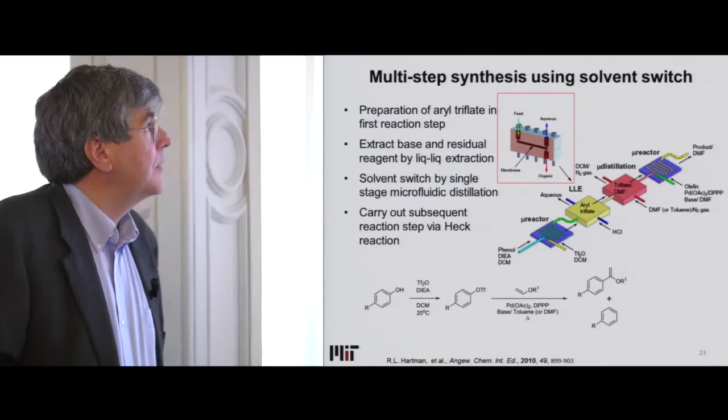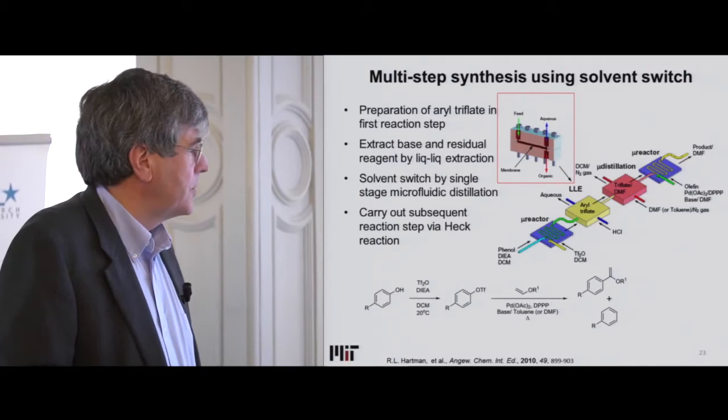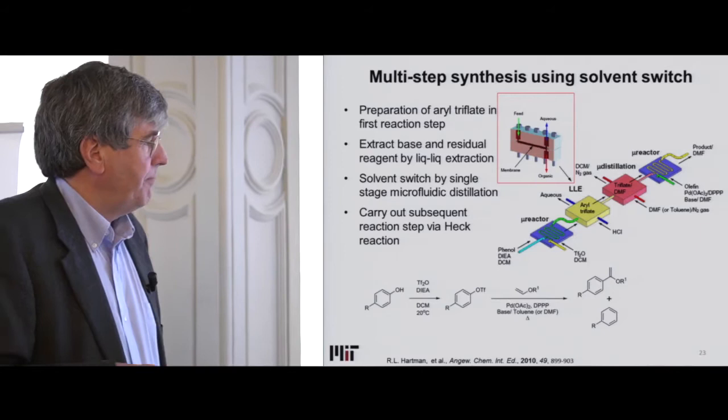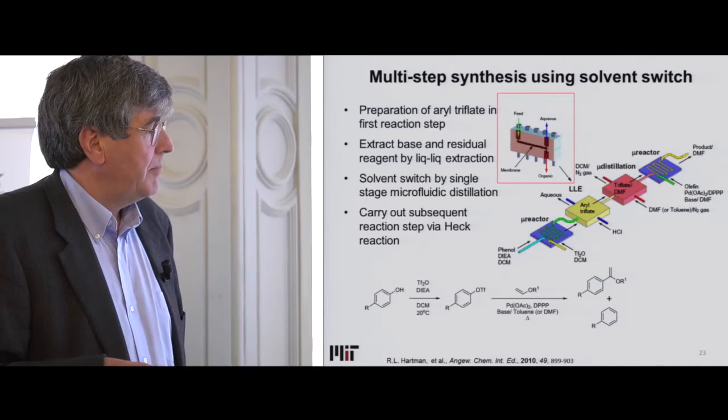Most chemists don't just want to do a single transformation — they want to build large molecules. As an example, we want to make a triflate, which is a very good intermediate. Unfortunately, the best solvent for that is dichloromethane. On the other hand, the second reaction we'd like to do — a palladium-coupled Heck reaction — really works best in toluene and DMF. So we have to change the solvent.